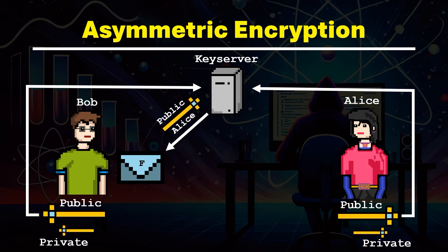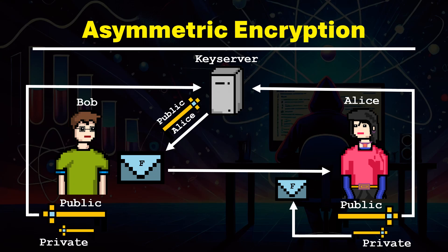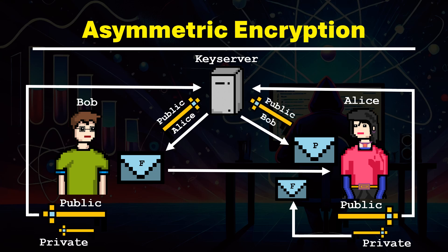Then Bob sends the message to Alice. Once Alice receives the message, she and only she can decrypt it with her private key stored on her device. Throughout the journey from Bob to Alice, no one can decrypt the message because only Alice has the private key. If Alice wants to reply to Bob, her message is encrypted with Bob's public key and then sent on its way. Bob and only Bob can then decrypt Alice's reply with his private key.